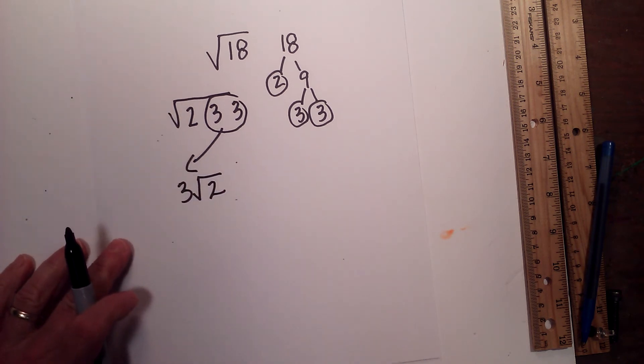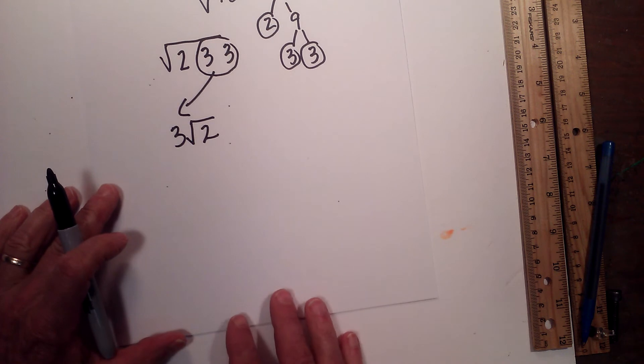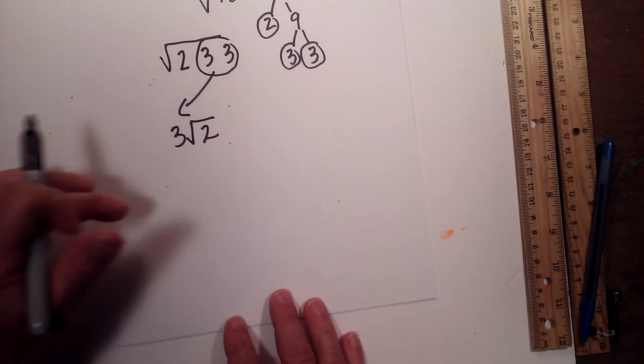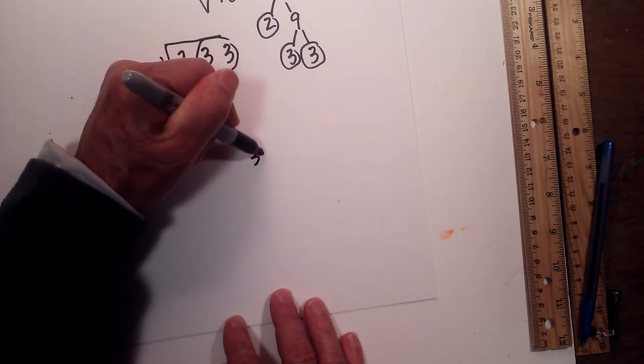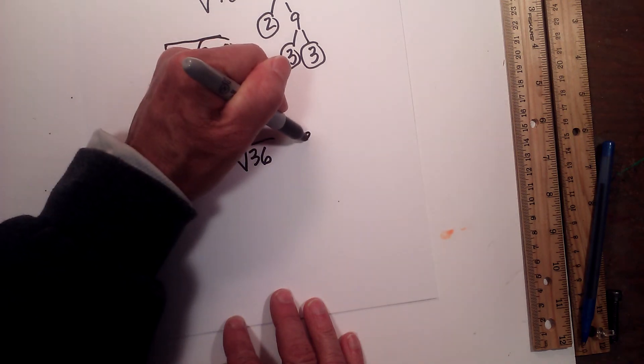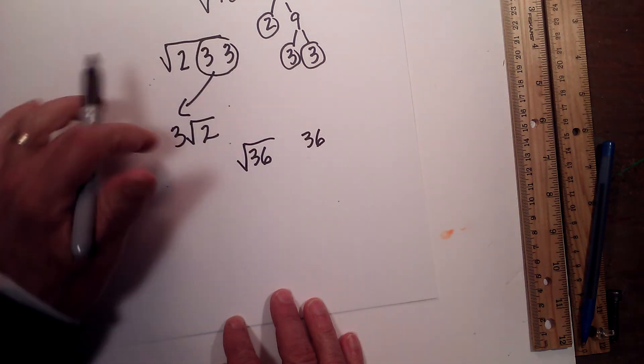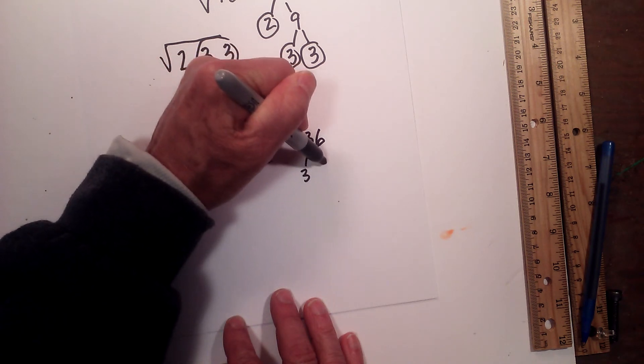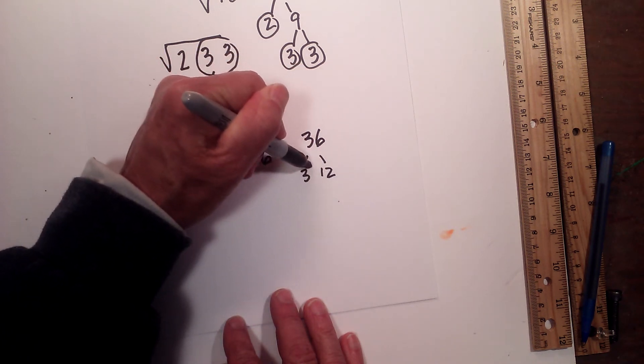Okay, and I'm going to work one more example quickly, something that's just a little bit different. Let's go ahead and go with 36, square root of 36. Here is the factor tree, 3 times 12, circle the 3.